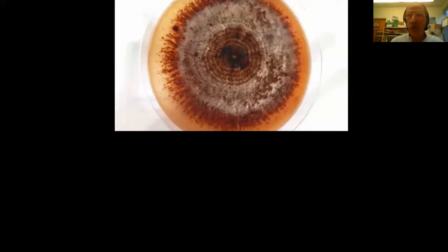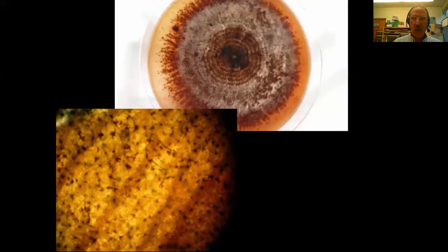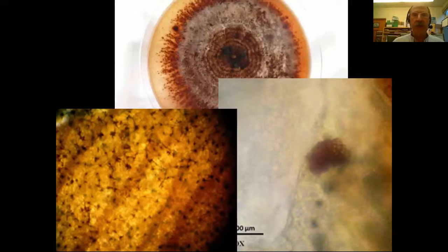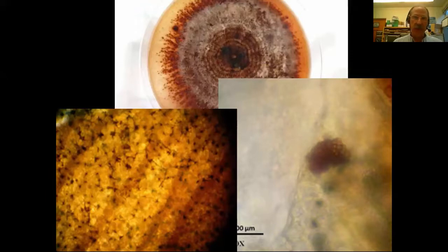In addition to splash-dispersed sticky spores, boxwood blight also produces microsclerotia — small brown dots visible in fallen leaves. These are survival structures consisting of groups of brown cells that can persist in fallen leaves in the soil for five years. This long survival time makes sanitation an especially important management tactic.